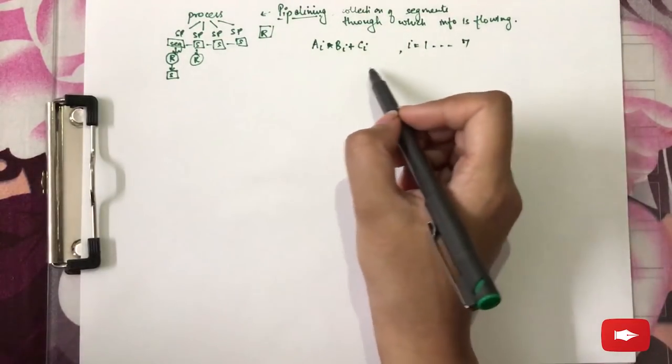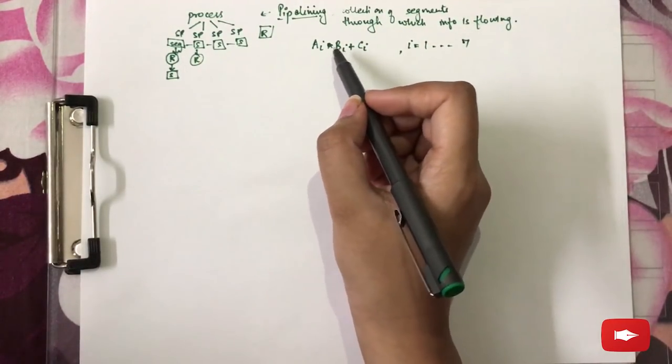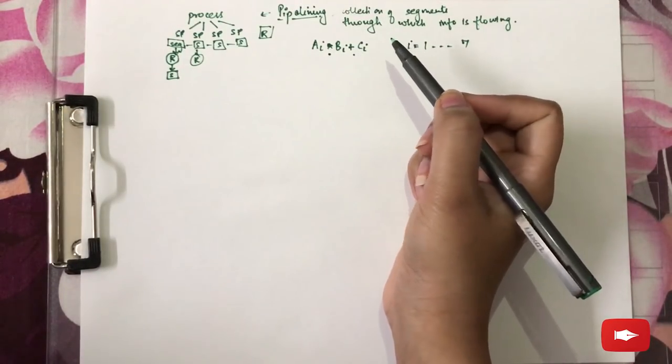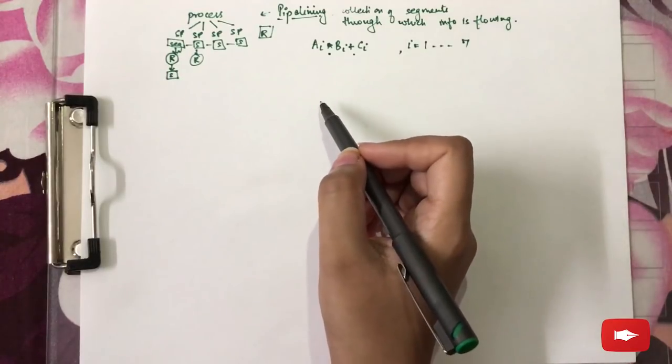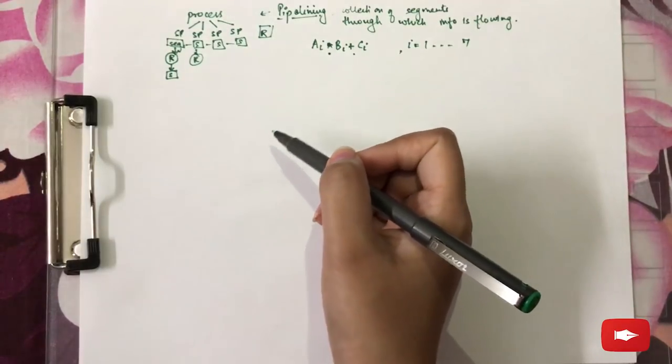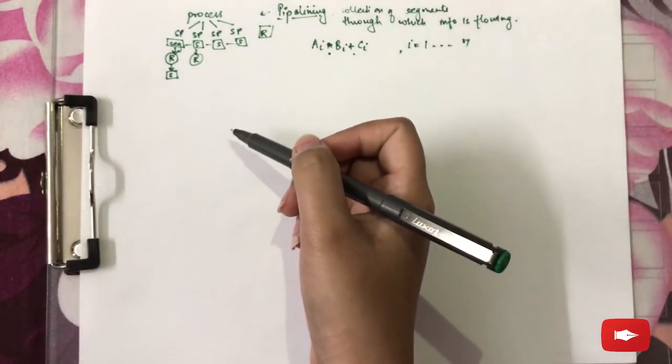Now, this is a process which includes two sub-operations. One is multiplication, the other is addition. How can we separate these sub-operations into segments is what we are going to do now. Let's illustrate it.